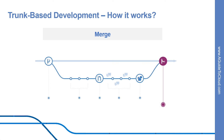How can you merge? Now that your changes have been verified, it is time to merge your code into the master branch. Once merged, pull requests preserve a record of the historical changes to your code because they are searchable — they let everyone go back in time to understand why and how a decision was made. By incorporating keywords into the text of your pull request, you can associate issues with code. When your pull request is merged, the related issues can also be closed.